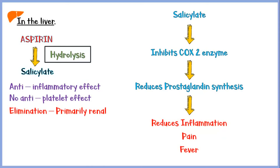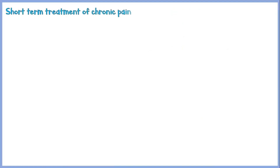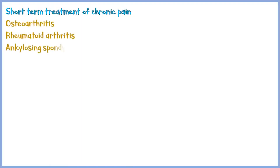Aspirin is indicated in conditions like headache, musculoskeletal and dental pain. In addition, it is used in the short-term management of chronic pain, including osteoarthritis, rheumatoid arthritis, and ankylosing spondylitis.